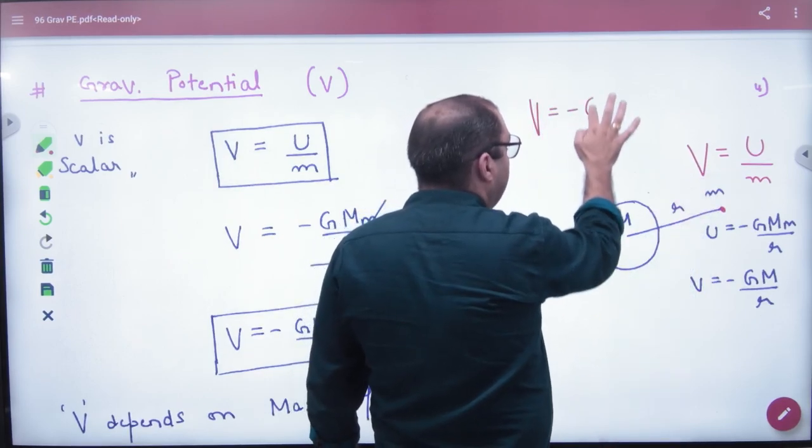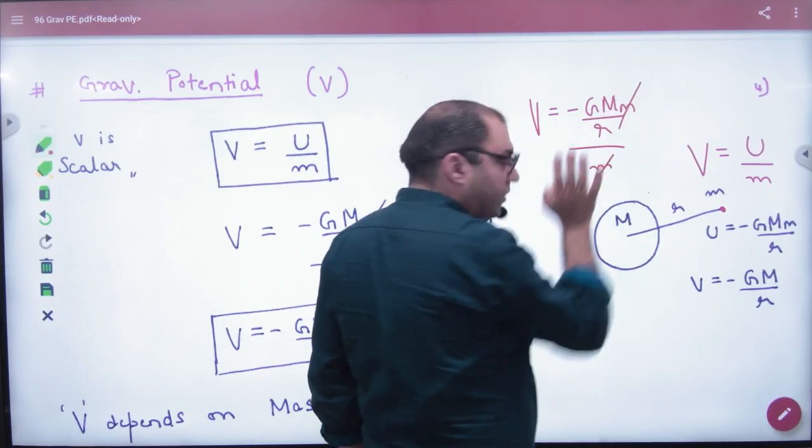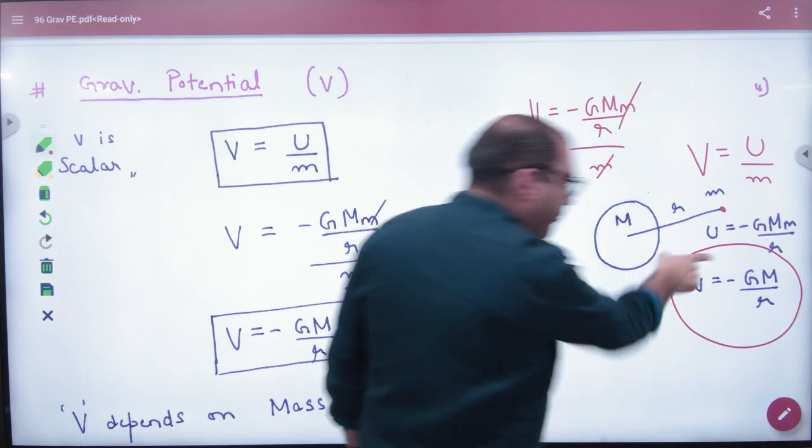Ab mujhe pata hai, energy ka formula minus G Mm by r, by m hai, m se m, cancel. Ye formula aa gaya potential ka.